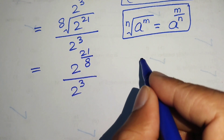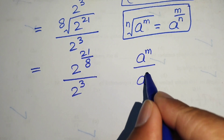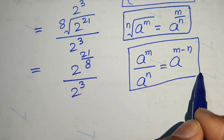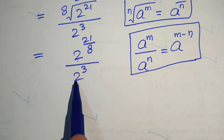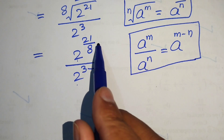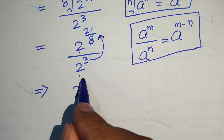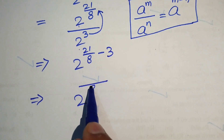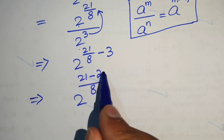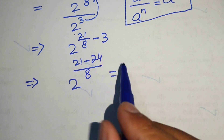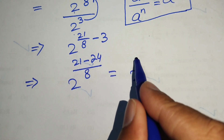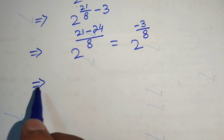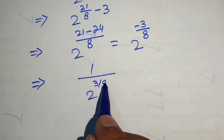We apply the power division law: a to the power of m over a to the power of n equals a to the power of m minus n. Since both bases are 2, we subtract the exponents: 21 over 8 minus 3. Taking the LCM of 8, we get 21 minus 24 over 8, which equals minus 3 over 8. Moving the negative exponent gives us 1 over 2 to the power of 3 over 8.